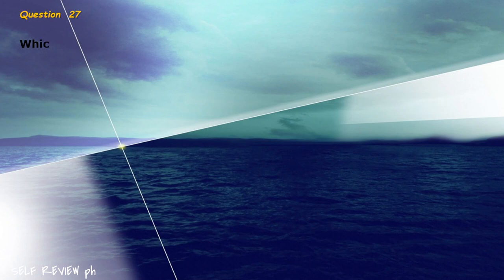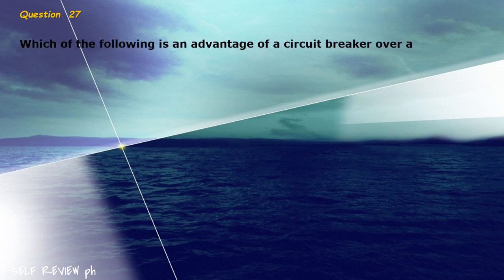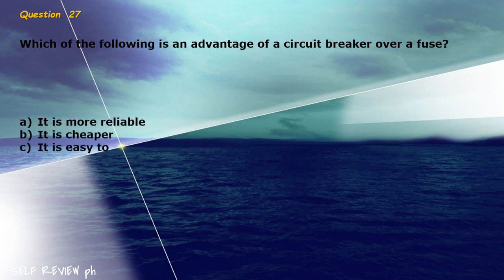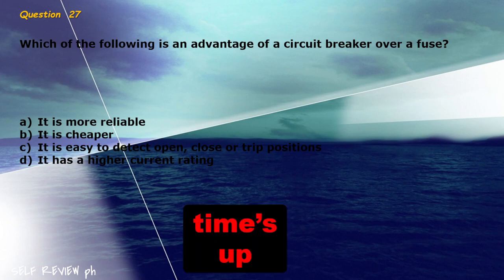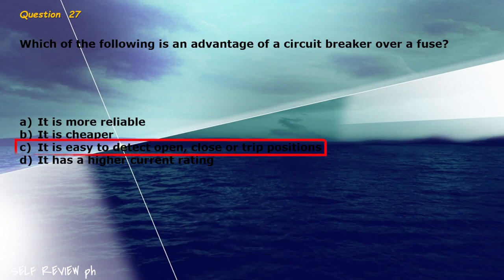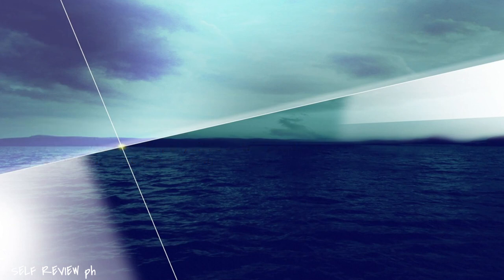Question 27: Which of the following is an advantage of a circuit breaker over a fuse? A) it is more reliable, B) it is cheaper, C) it is easy to detect open, close or trip positions, D) it has a higher current rating. The correct answer is letter C, it is easy to detect open, close or trip positions.